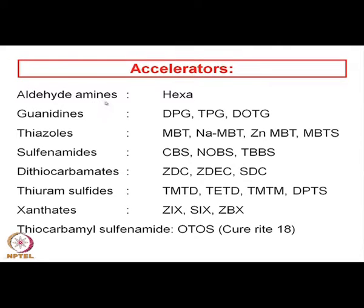The classes of accelerators include aldehyde-amines, guanidines, thiazoles, sulfenamides, dithiocarbamates, thiuram disulfides, xanthates, and thiourea sulfenamides. Their speed of reaction with sulfur to form cross-link bonds — sulfur cross-link bonds — differs depending on their chemical formula and chemical structures. That is why proper selection of a suitable accelerator from this list is necessary.